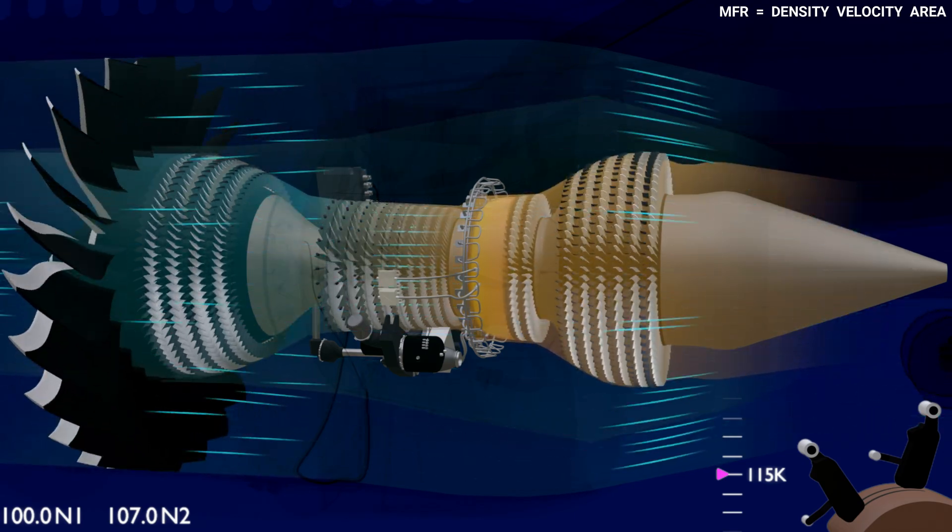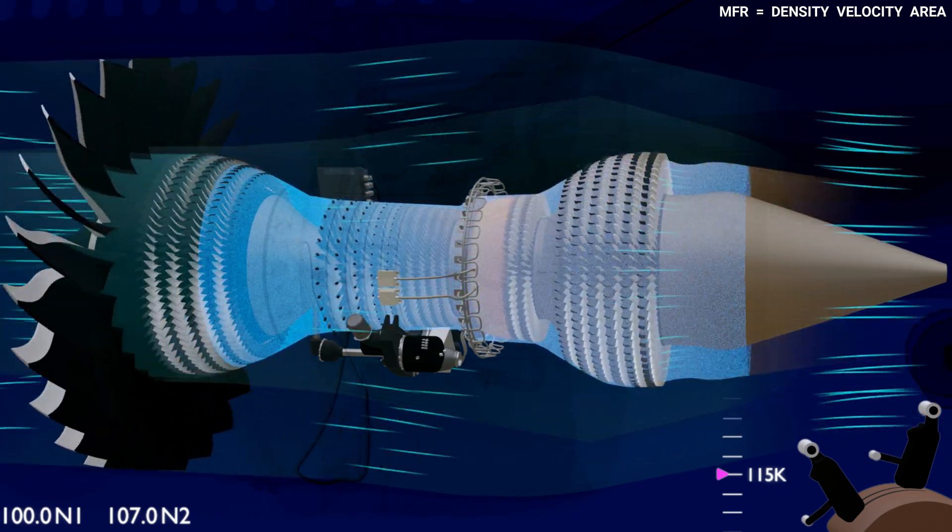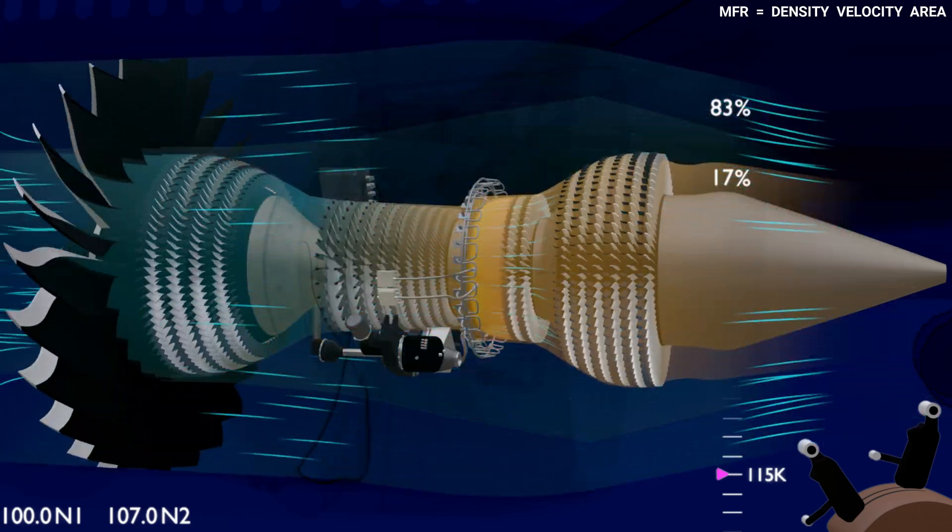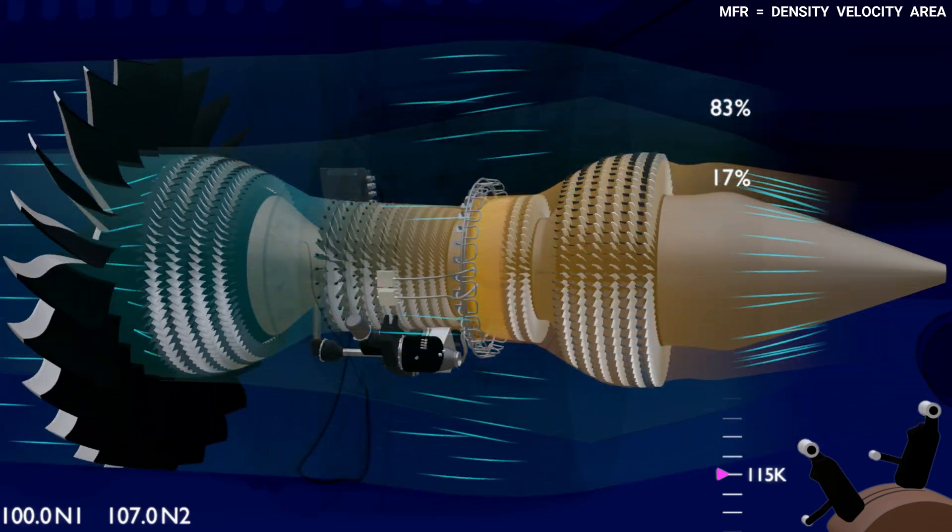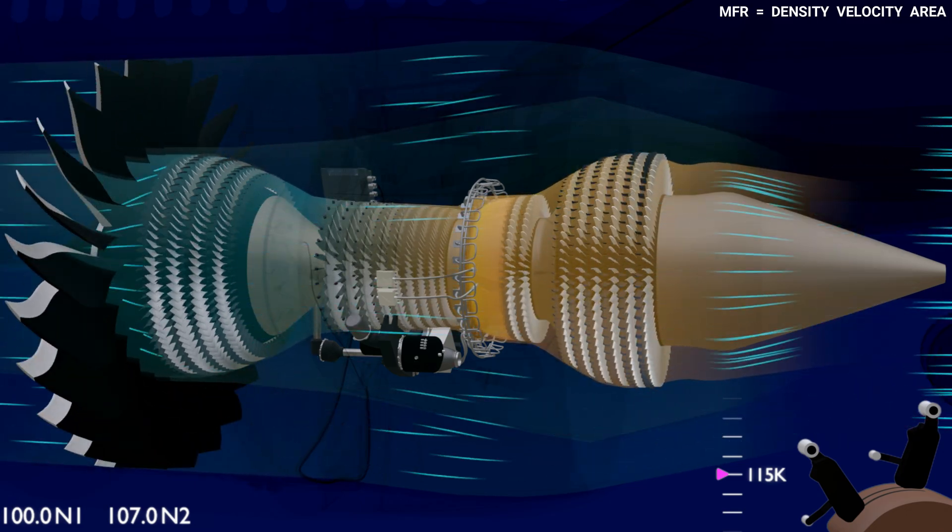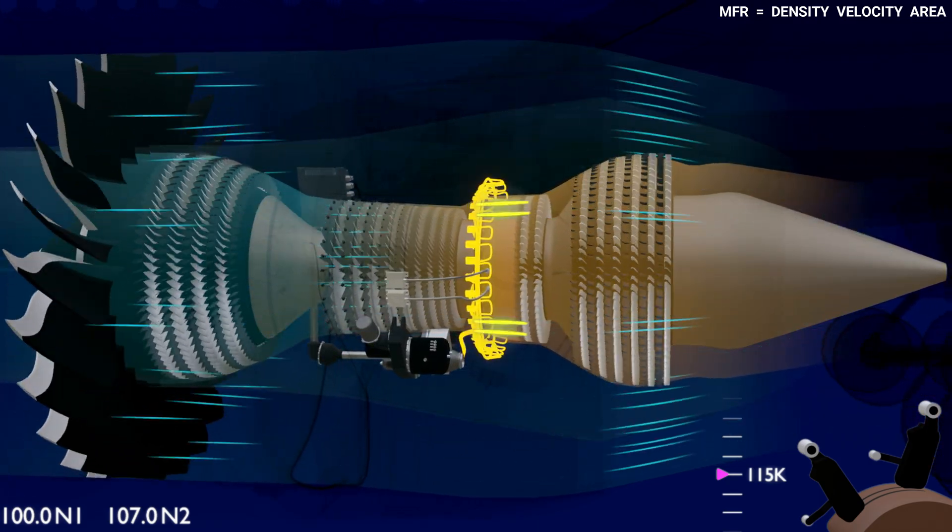The total thrust of the engine is the addition of the thrust produced by the core airflow and the bypass airflow. On the GE90, the bypass airflow contributes 83% of the thrust, and the core airflow contributes the remaining 17%, which signifies why the turbofan engines are so successful.